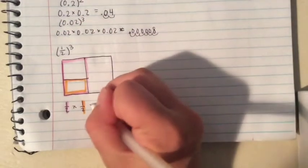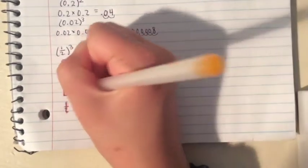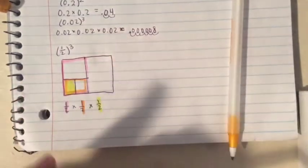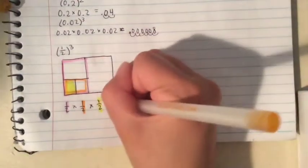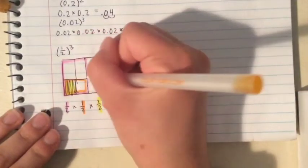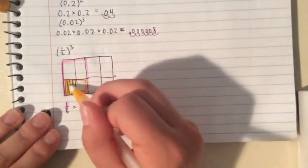When you apply one-half again, you end up with this yellow box, which is equal to one-eighth of the original box, kind of like this—one-eighth.